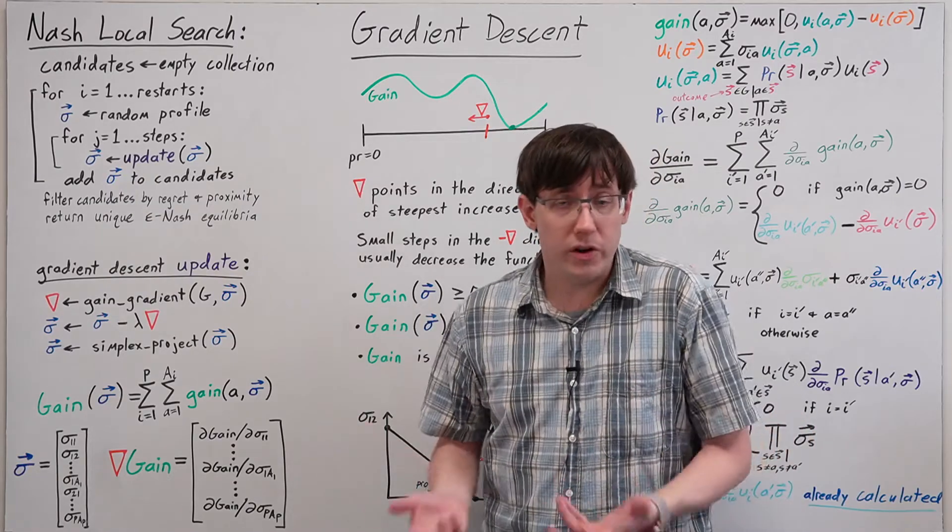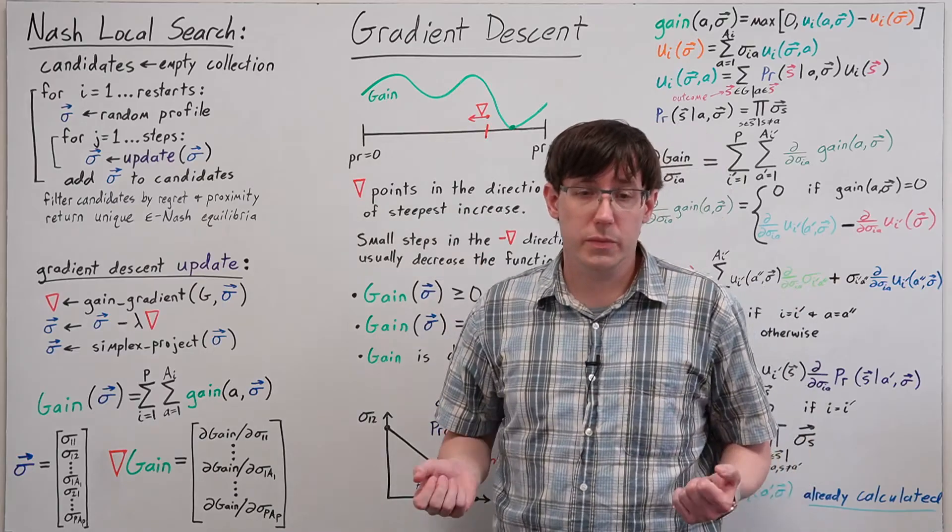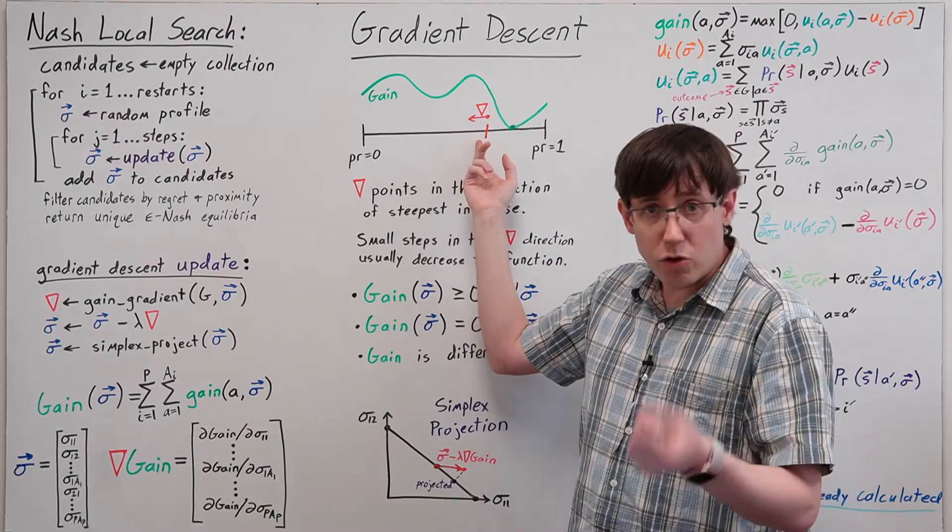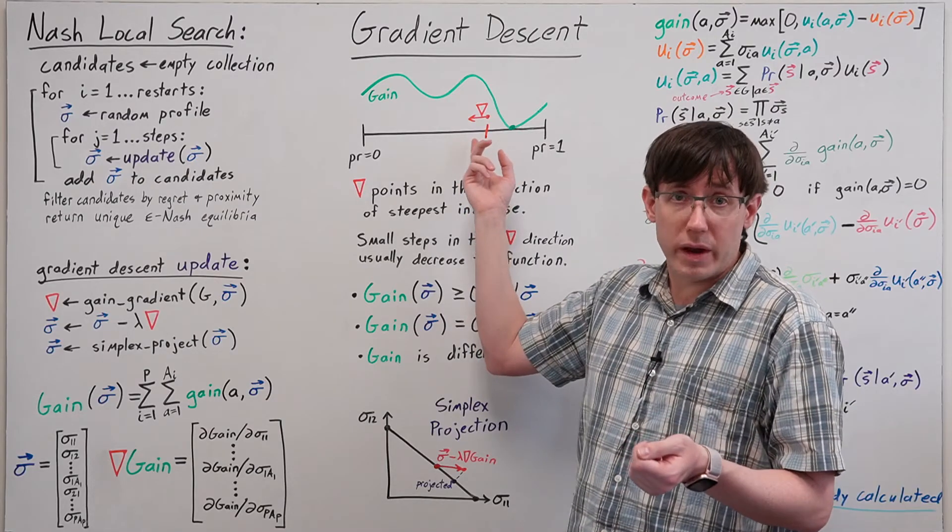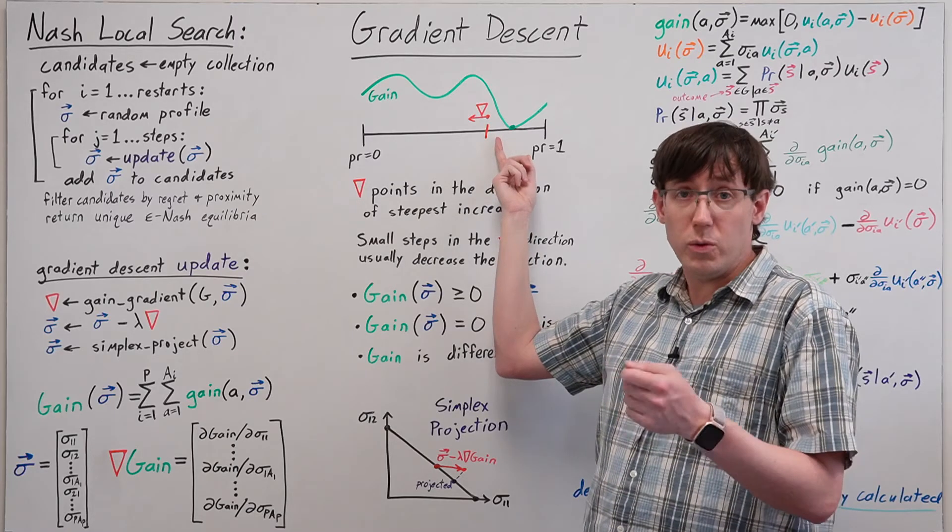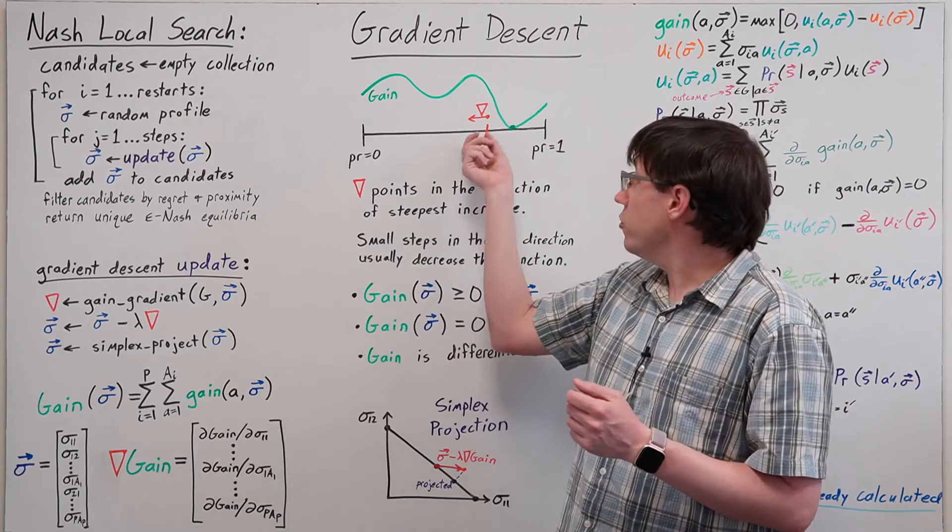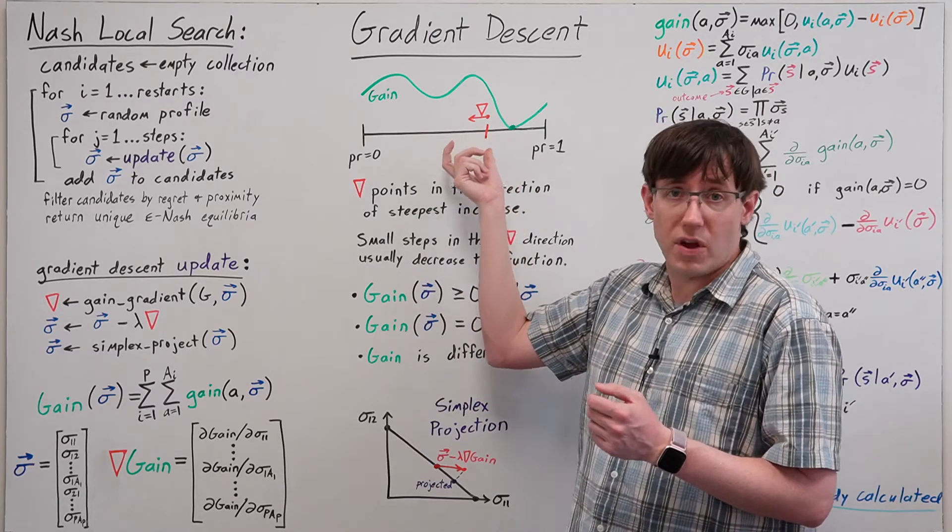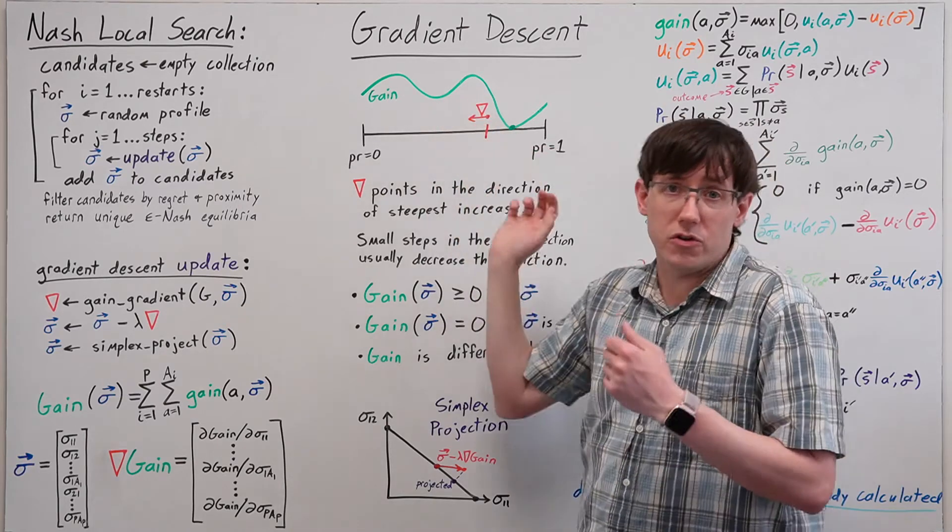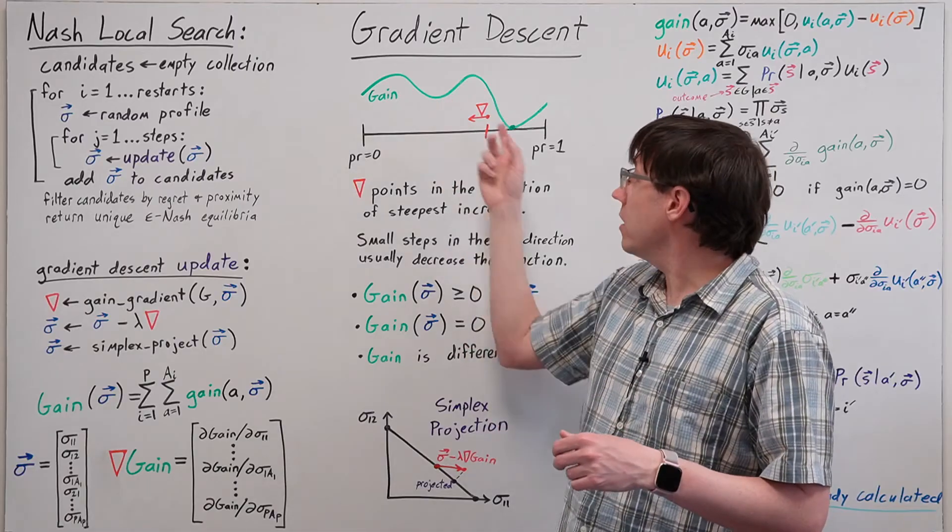This leads us to a generic algorithm for finding a function's local minima, where we can start from some arbitrary input point, calculate the gradient of the function at that point, take a small step in the minus gradient direction to get a new input point, and then repeat. As long as we choose an appropriate step size, iterating this update should push us downhill until the function flattens out, at which point we will often have found a local minimum.